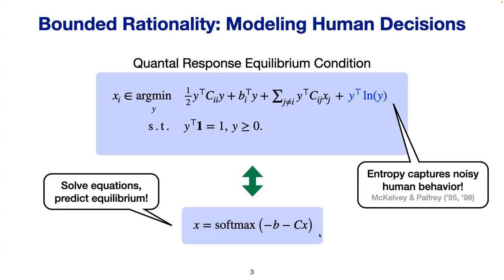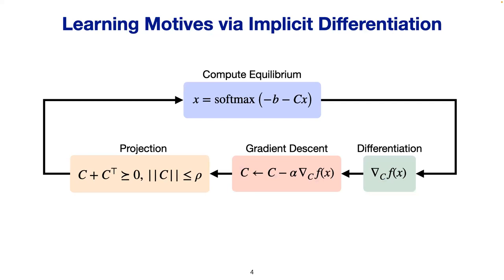QRE was first developed in economics and migrated to transportation and other contexts. A key byproduct of adding entropy is that it simplifies the equilibrium condition considerably. The entropy pulls each player's decision away from the boundary of the polytope, which simplifies the complementarity condition. You can then write down the equilibrium as a set of nonlinear equations, since each element of the strategy vector y is strictly positive at optimality, and solve this system to get predictions.